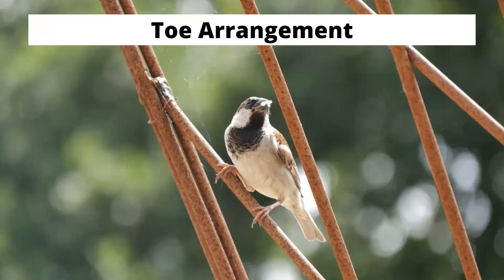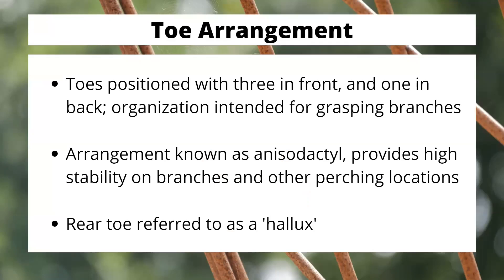Diving into the toe arrangement, songbirds have a very specific one with a specific design intention behind it, as you can see displayed on the screen. They have three toes positioned in the front and one in the back. That organization is intended for grasping onto branches or wherever they're going to perch or roost. The arrangement is known as anisodactyl, and it provides a high amount of stability on branches and lots of different perching locations.